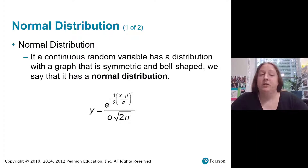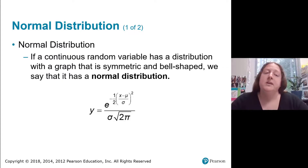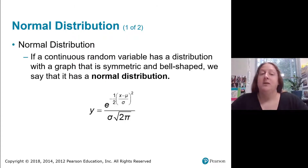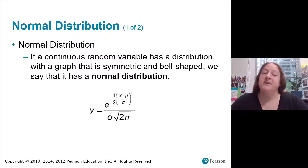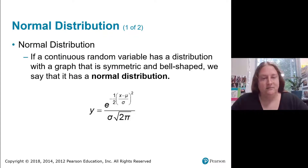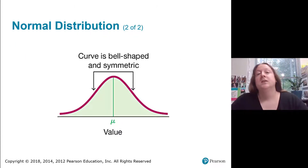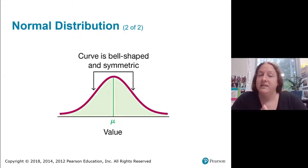So first, the normal distribution. Don't let the equation scare you. If a continuous random variable has a distribution with a graph that is symmetric and bell-shaped, we say it has the normal distribution. The equation of that bell shape is given there, but you never need to use it — it's just shown to confirm this really corresponds to an equation. When we graph it, the curve is bell-shaped and symmetric, with the center of the bell being the population mean mu.